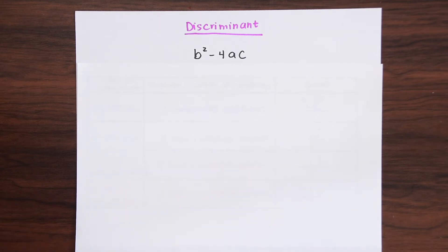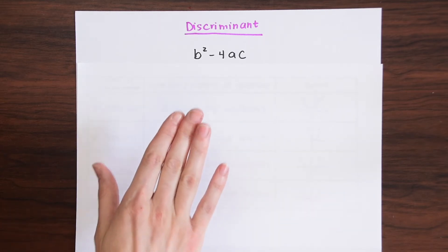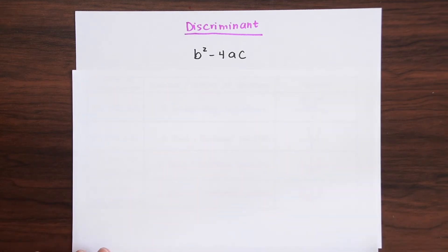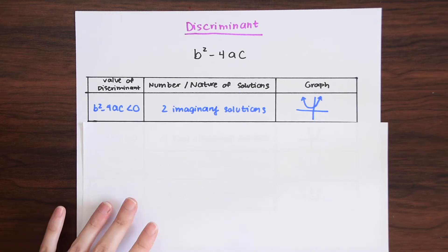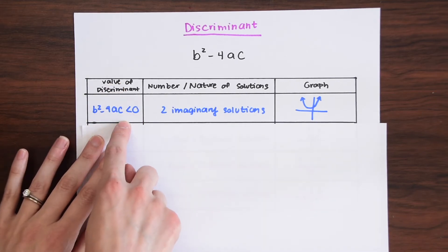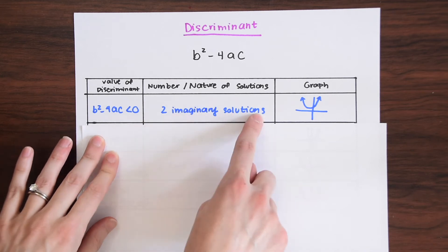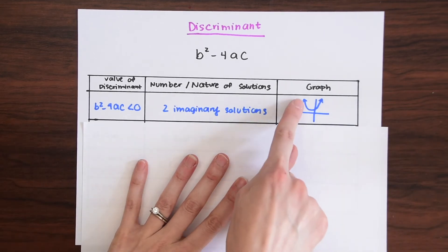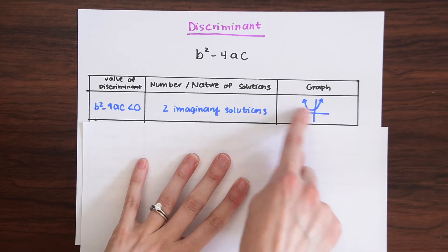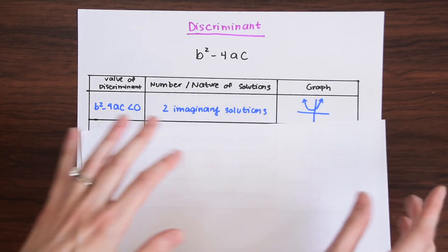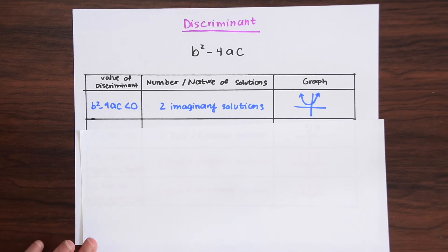So how does it work? Depending on what value you get from the discriminant, there are different outcomes we can determine about the solution. If the discriminant is negative — less than zero — then we're going to have two imaginary solutions, or two non-real solutions. On the graph, that translates to no x-intercepts — just a floating parabola with no x-intercepts.